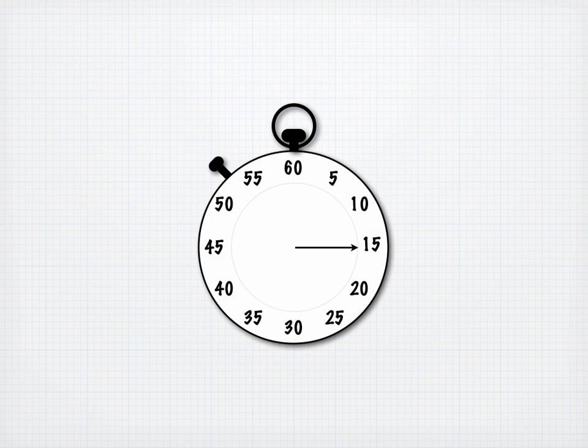We know that the direction of the centripetal acceleration of an object in uniform circular motion is always toward the center of the circle, but how do we calculate the magnitude of the centripetal acceleration? We'll derive an expression for it.